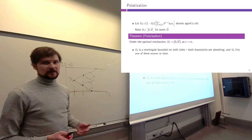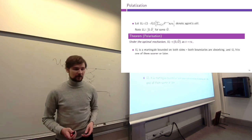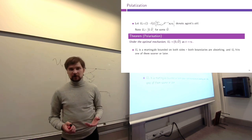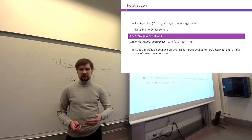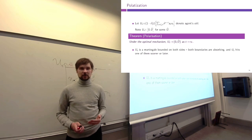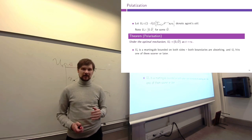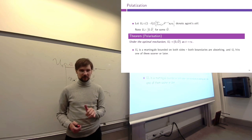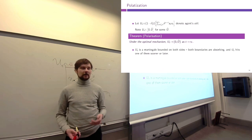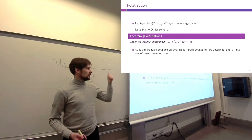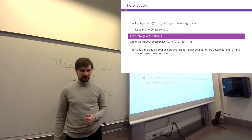The reality is Uₜ is not exactly a true martingale because of the flow utility the agent receives from the project being implemented, but the paper shows this property of Uₜ converging to one of the two bounds almost surely is maintained. The bottom line is: if you must use promises of future utility to provide incentives because you lack any contemporaneous instruments, you will have asymptotic inefficiencies.